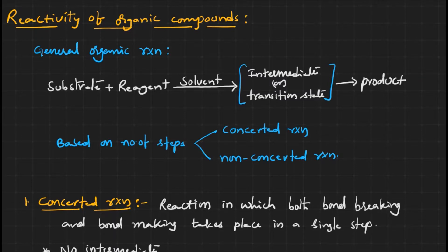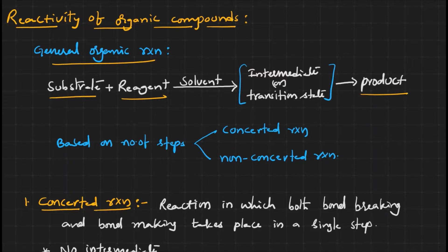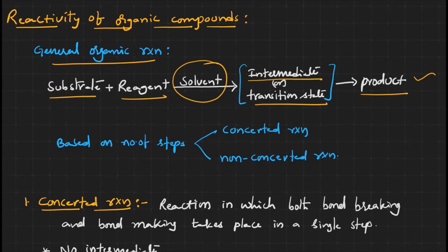Hello friends. In this video I am going to discuss the reactivity of organic compounds. Generally, in any organic reaction, we take a substrate and use a suitable reagent for the desired product, along with a suitable solvent for the reaction to occur. The reaction may go through an intermediate or transition state, and finally we get a product. This is general information about the organic reaction.